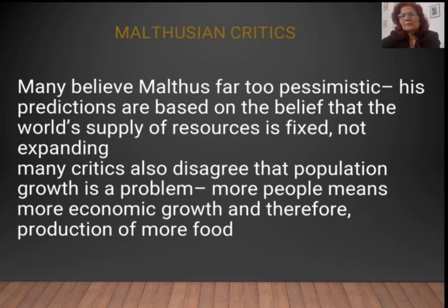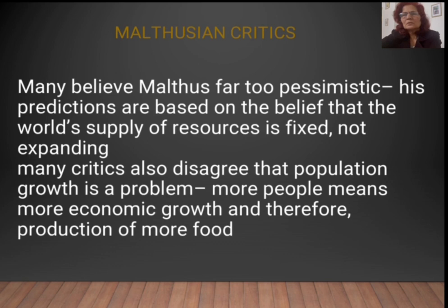Malthus was not specifically concerned with unequal distribution in the economy as the reason people go hungry, but rather with the non-availability of resources and the inability of economic growth to keep pace with population, making it difficult for people to get their food requirements easily. That is why Malthus emphasizes positive and negative checks, with moral restraint being the most important check to control population.